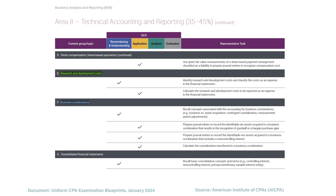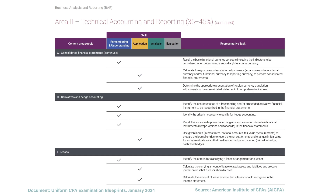Then we have business combinations, which involves journal entries for identifying whether you have goodwill from a transaction or a bargain purchase gain — really focused on the journal entries for acquiring another company. From there, we have consolidated financial statements, including non-controlling interests, primary beneficiaries, and variable interest entities. We also need to know how a company's functional currency is affected when consolidating financial statements, and how to make the foreign currency translation adjustment.